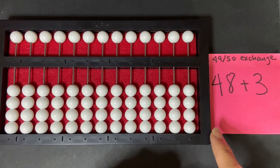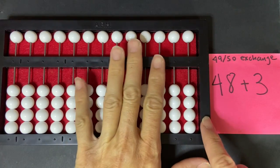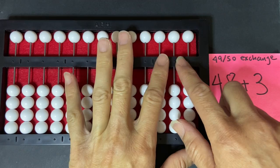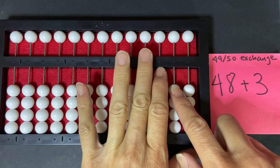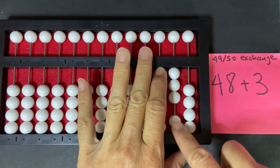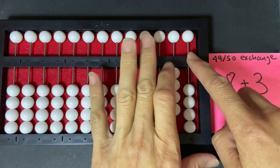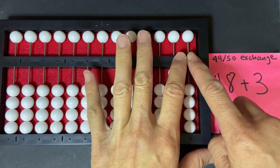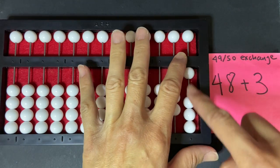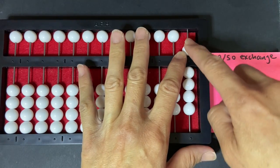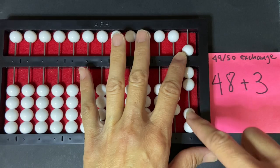We're going to start off by setting 48 on the abacus, so I have to move over to the tens column. I'm going to set the 40, 1, 2, 3, 4 beads here, and move over to the units column, 1, 2, 3, 4, 5, 6, 7, 8.